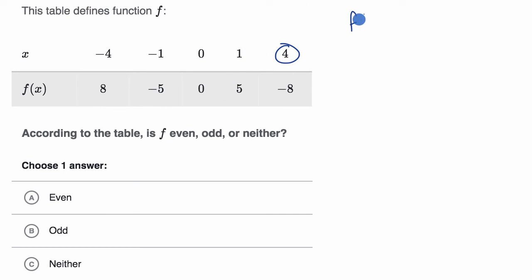We have f of four is equal to negative eight. What is f of negative four? The whole idea here is if f of x is equal to something, what is f of negative x? They give us f of negative four—it is equal to eight. So it looks like it's not equal to f of x, it's equal to the negative of f of x. This is equal to the negative of f of four. On that data point alone, at least that data point satisfies it being odd.